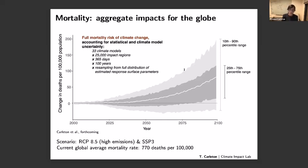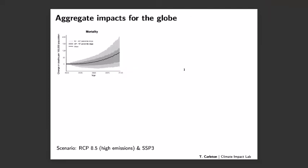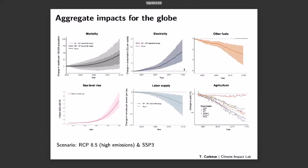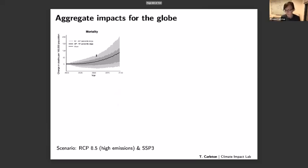Q: That final graph — is that net of adaptation costs? A: Yes, that one in gray is net of adaptation costs. The estimated adaptation costs don't change the picture too much — it's about 14 deaths per 100,000 at the end — but yes, that is the net number.